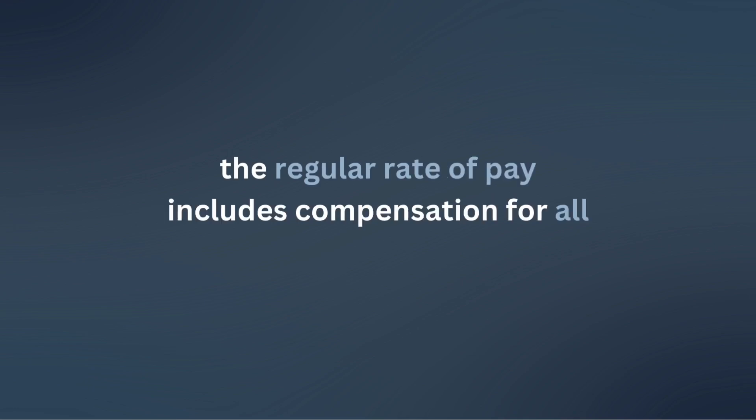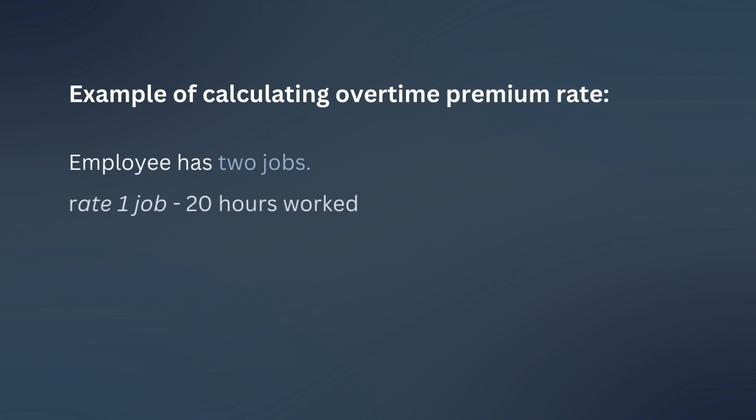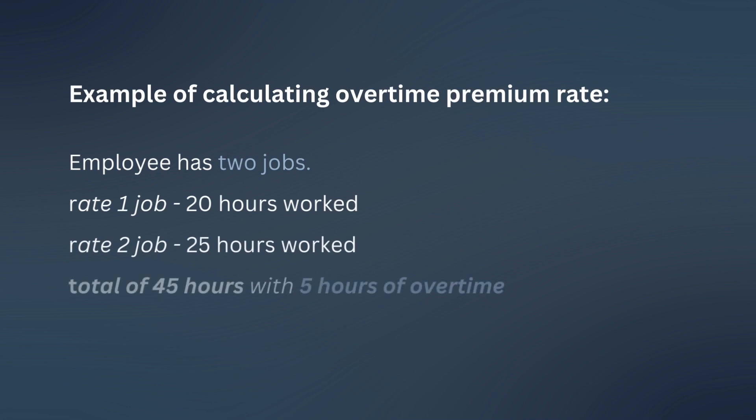The regular rate of pay includes compensation for all services rendered. So if an employee has multiple pay rates, this is one example where the employer will have to calculate an overtime premium rate. The way you do that is you pay all of the hours, including overtime hours, at the rate of pay. So if an employee has two jobs and they work 20 hours at rate one and 25 hours at rate two, that is a total of 45 hours.